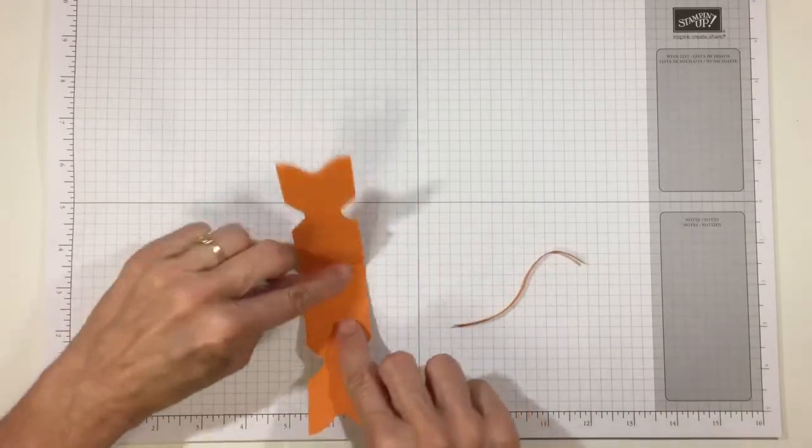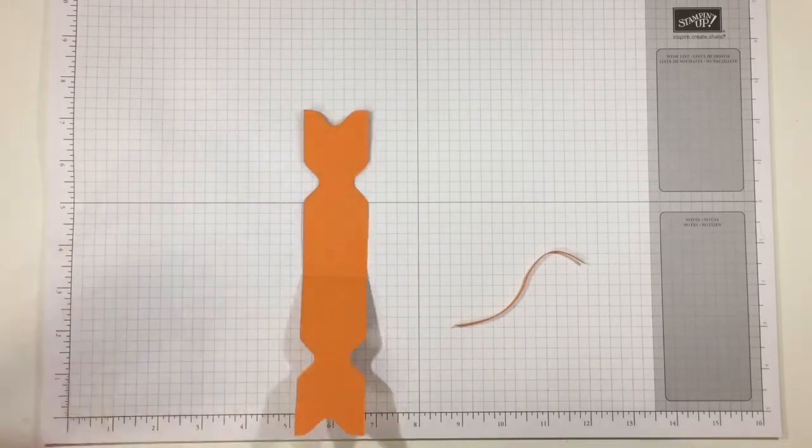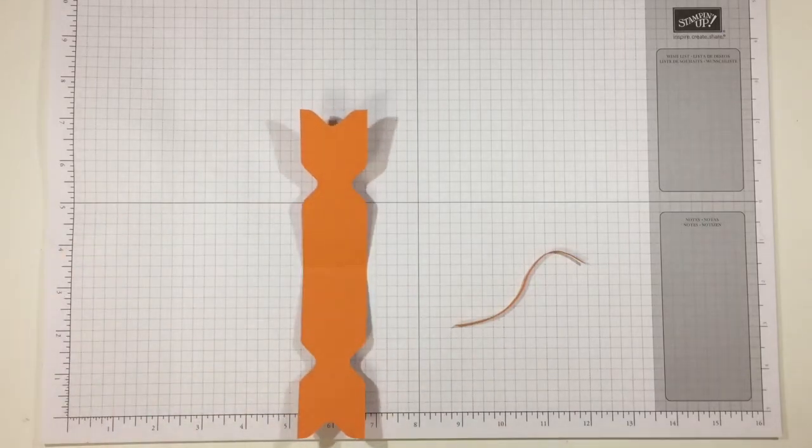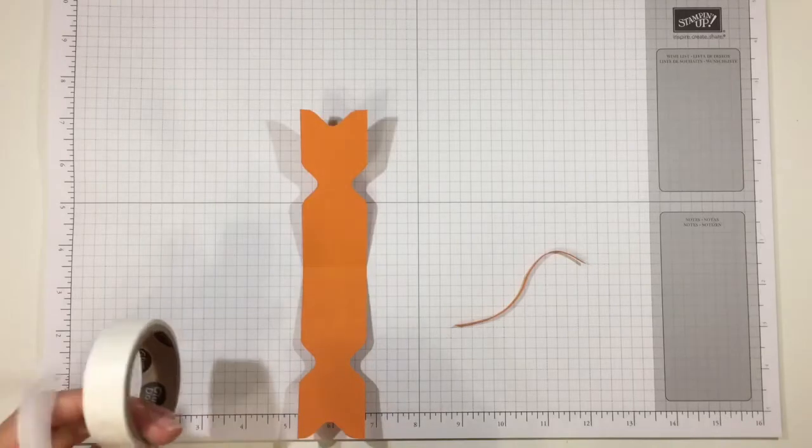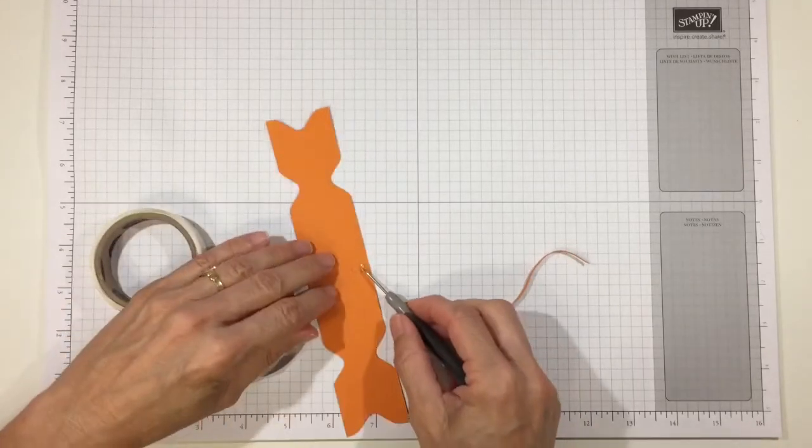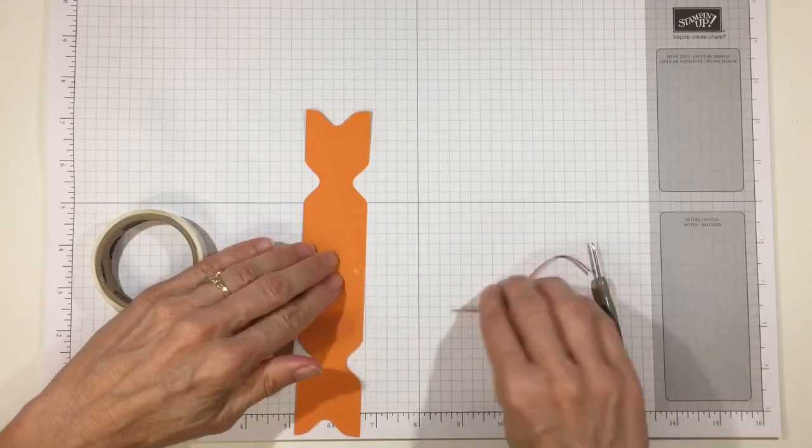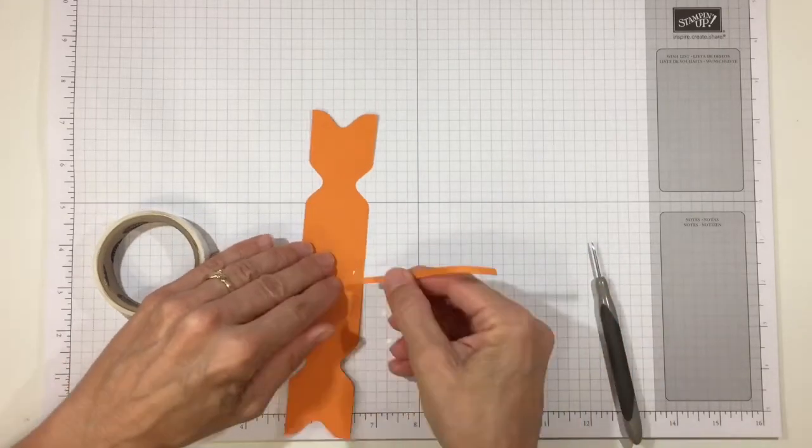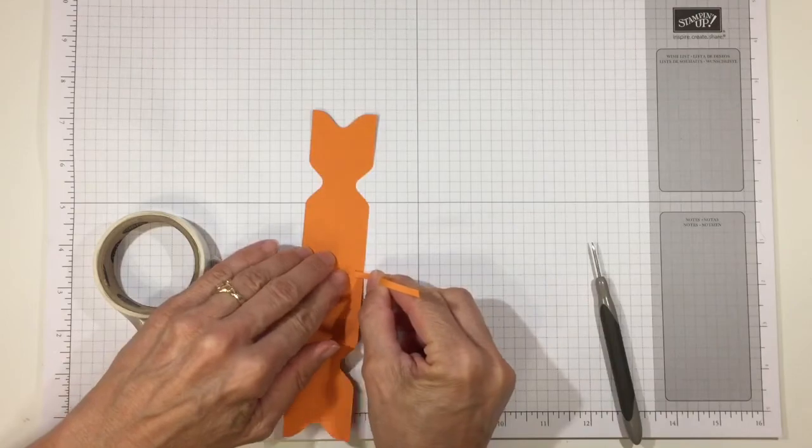Right between the two score lines at the base, put a glue dot right there on that one on the right side and secure the base of his tail sticking out to the right.